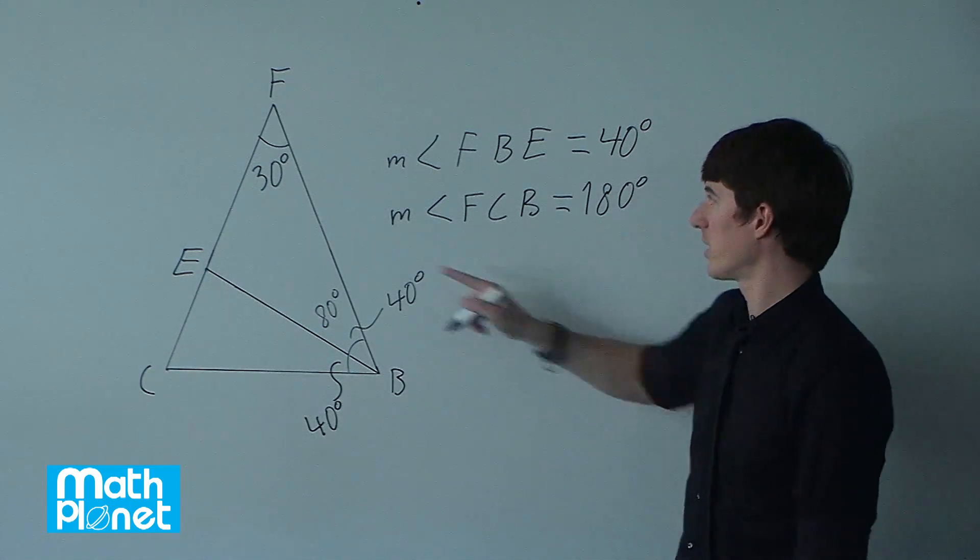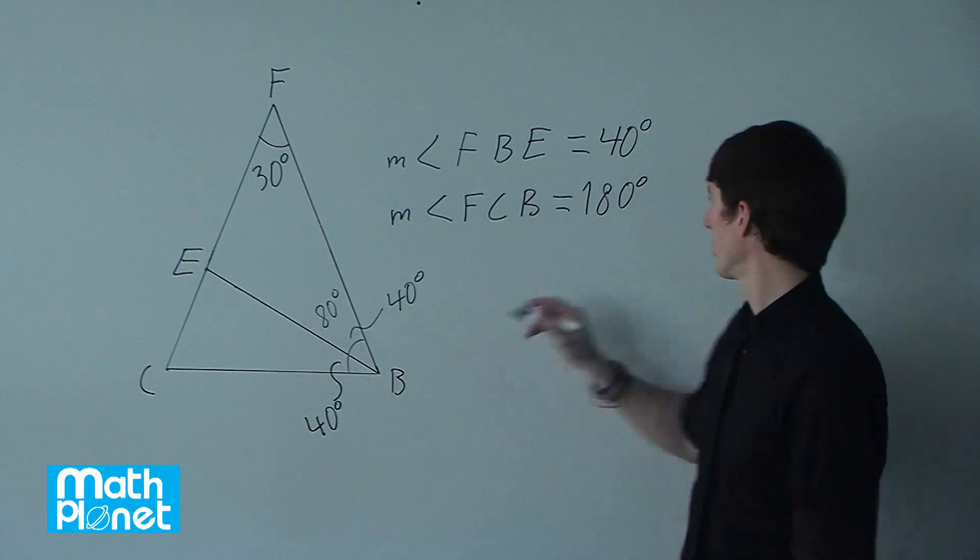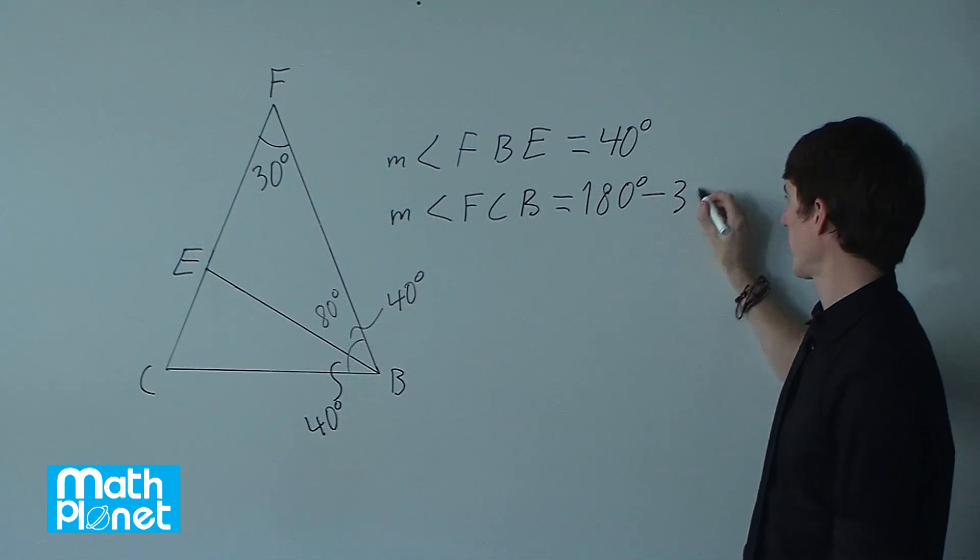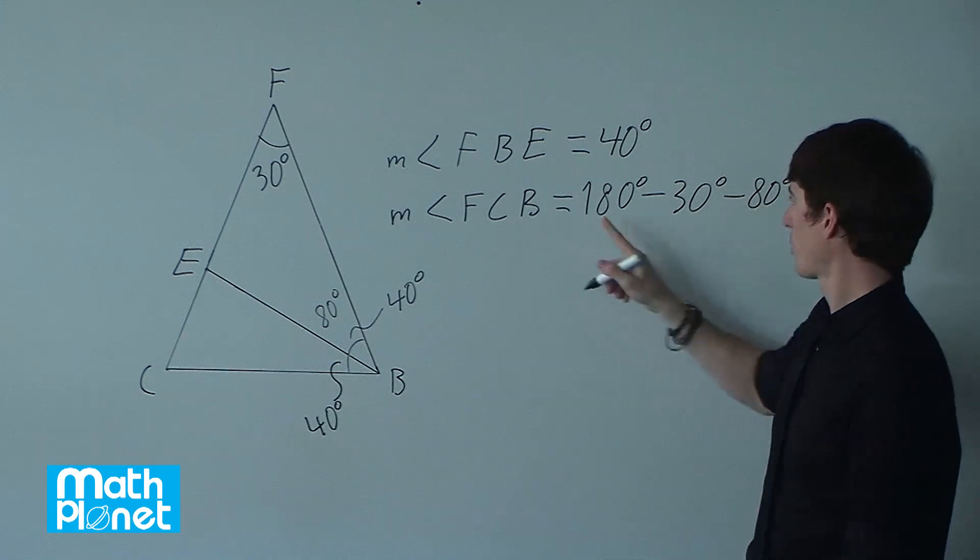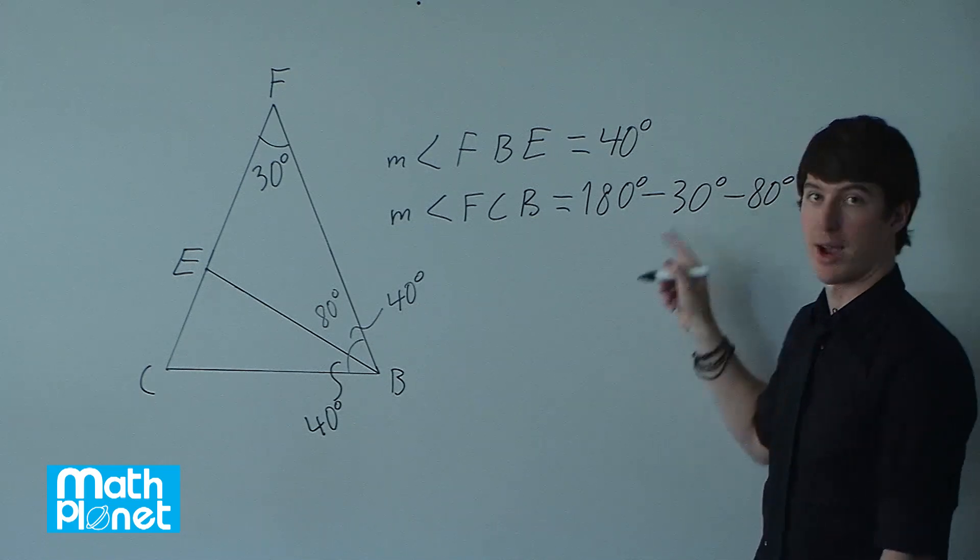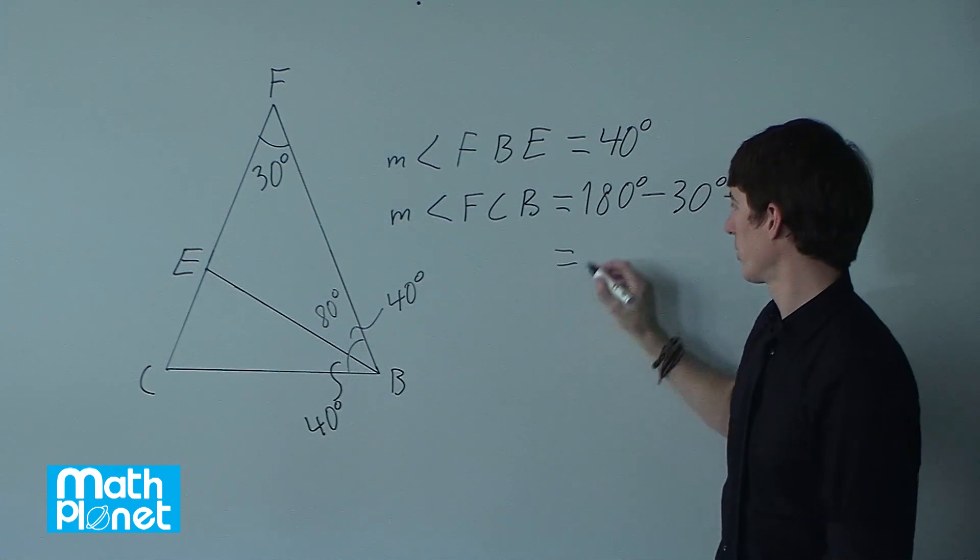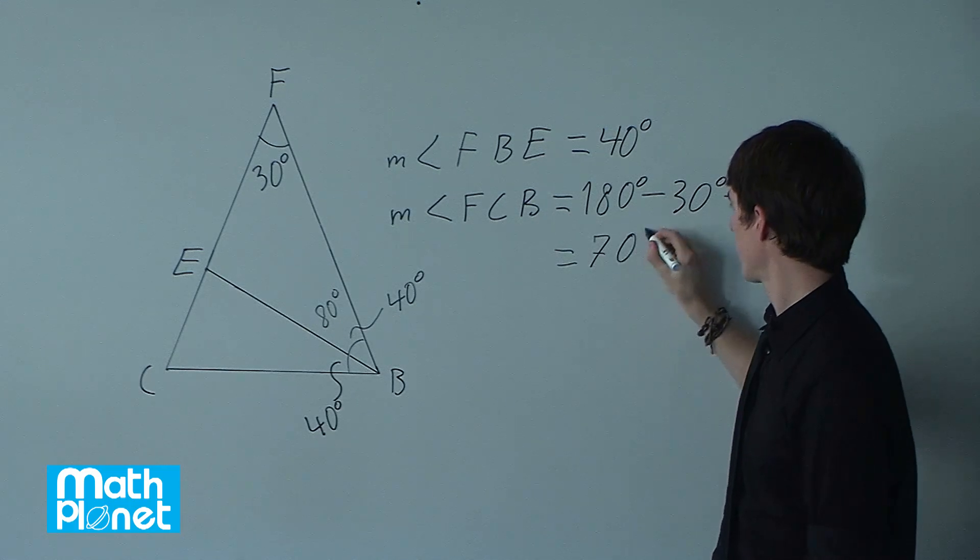but we need to subtract this angle and this angle. So, subtracting 30 degrees and 80 degrees. So 180 minus 80 minus 30 gives us, this angle is just 70 degrees.